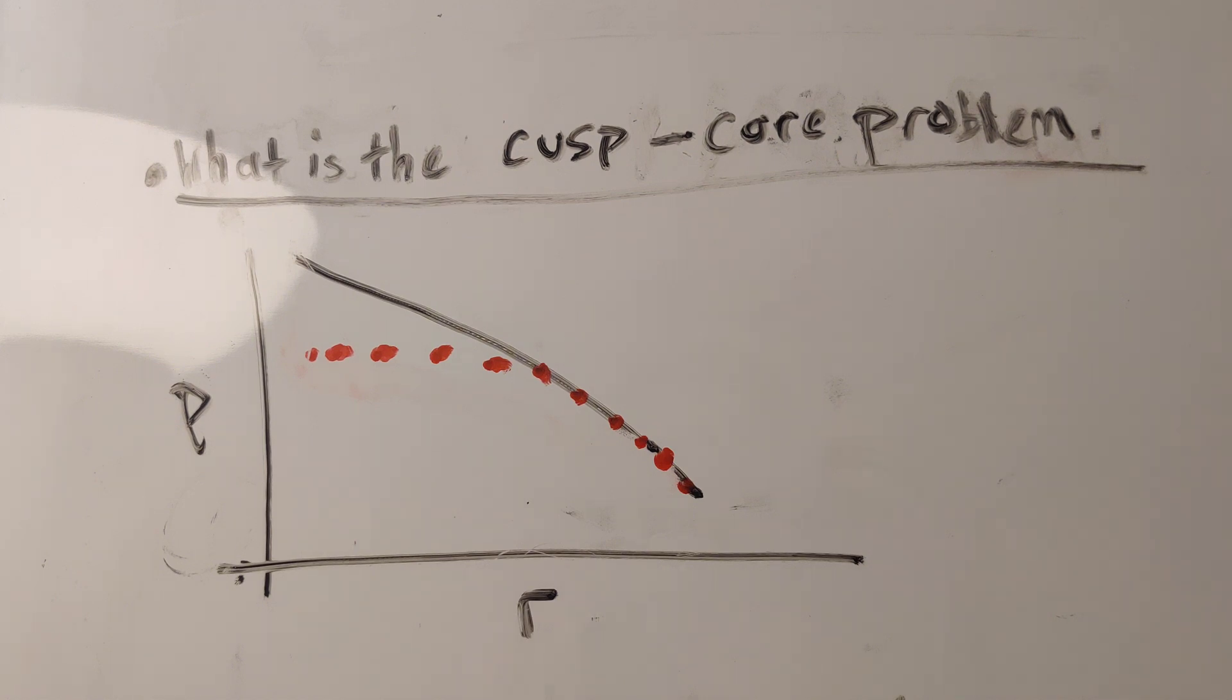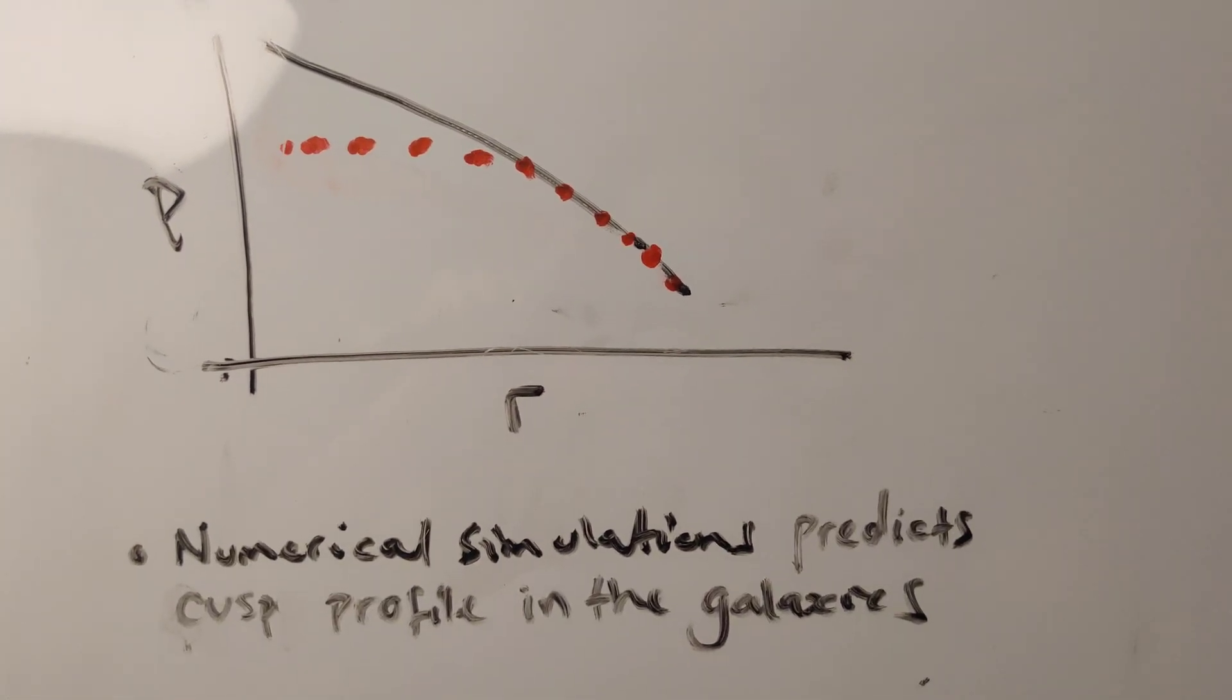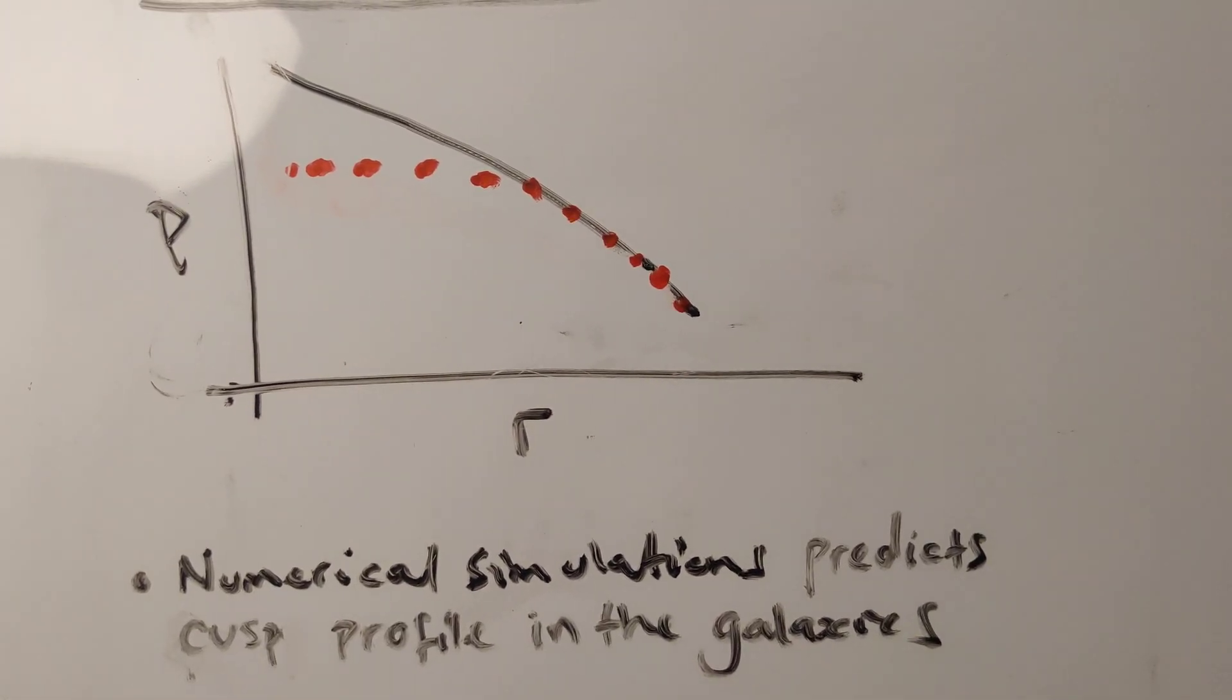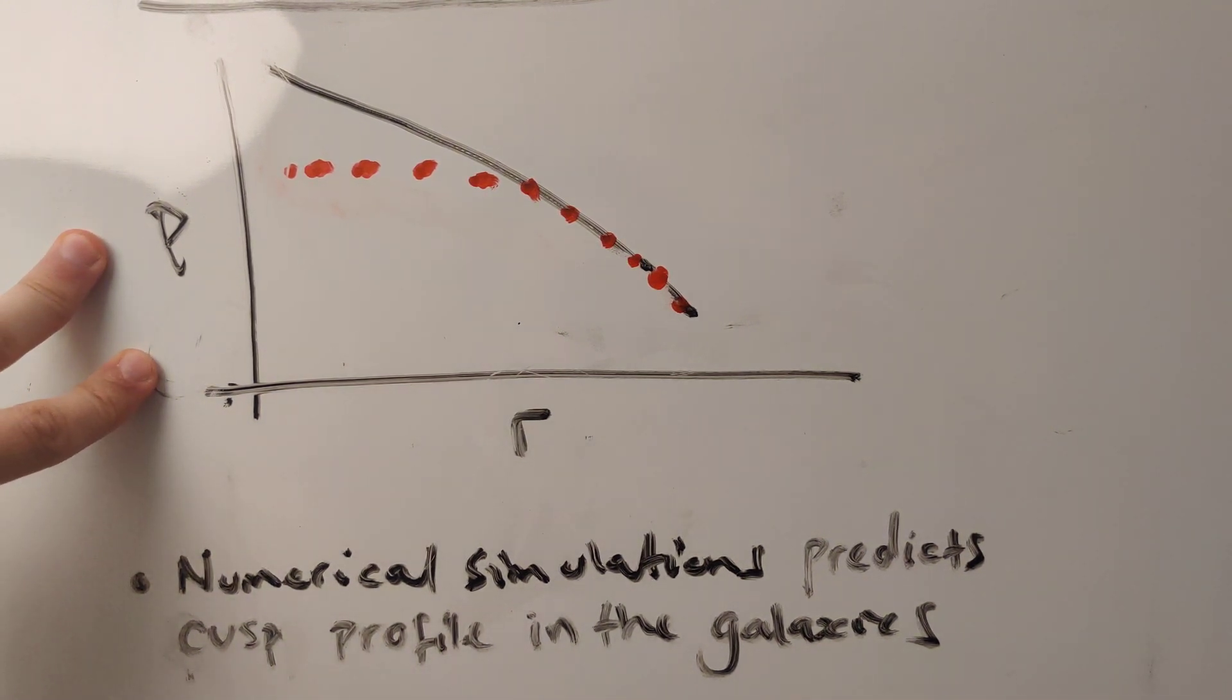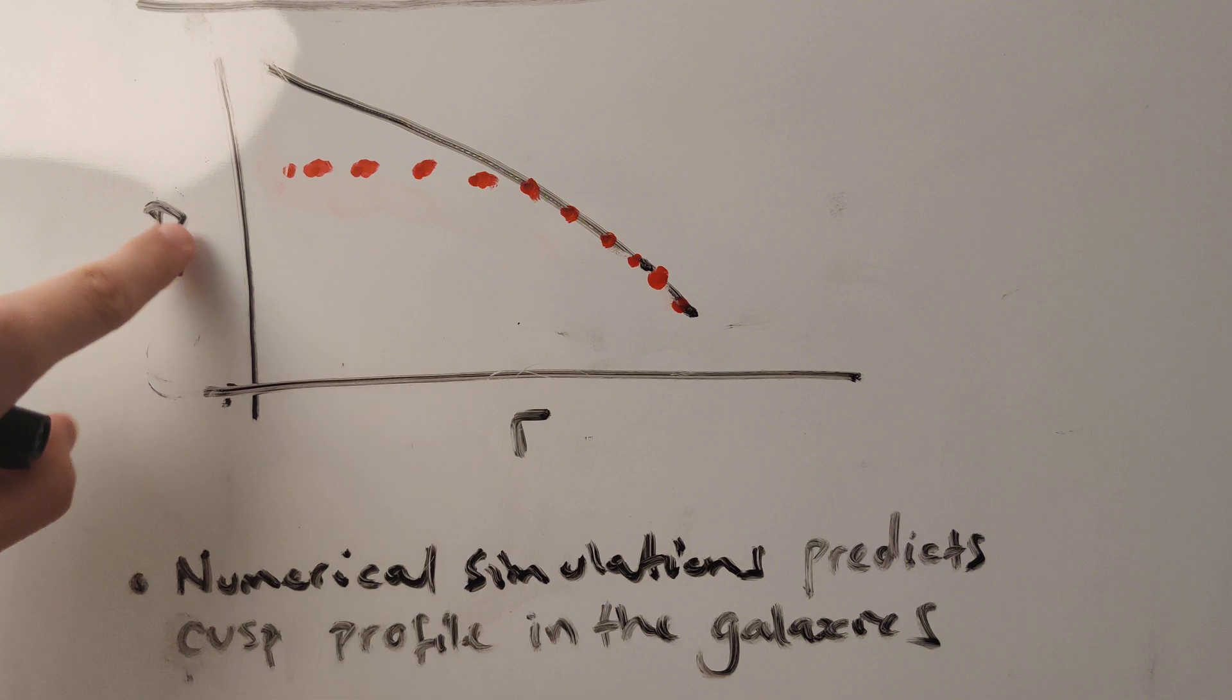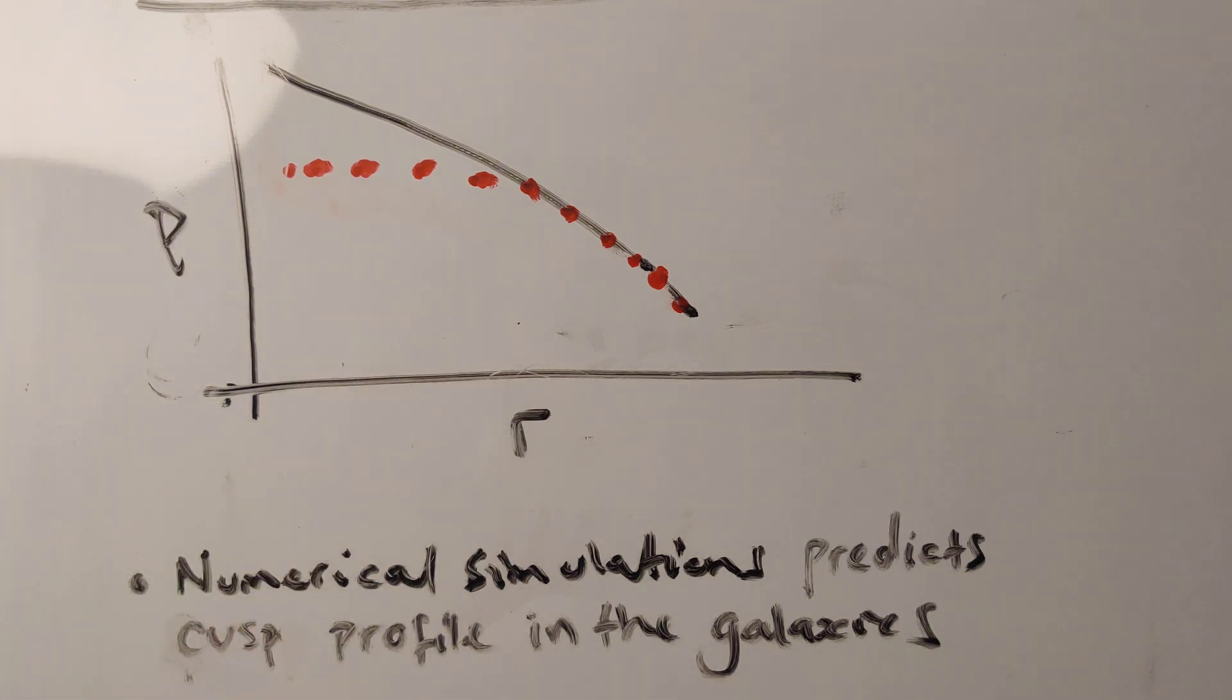Let's get going. It's going to be a really short video because I want to keep it as simple as possible. Here we have a plot. We have the density of dark matter against the radial distance from the centre of the galaxy.